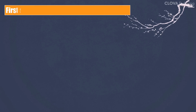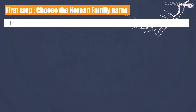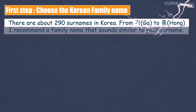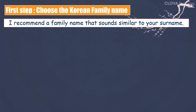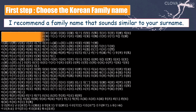To make a Korean name, you have to choose a Korean surname first. There are about 290 surnames in Korea. I would recommend choosing a last name that sounds similar to your own surname. The last names I recommend are used by the most people in Korea. Now choose a surname similar to your initials in alphabetical order.